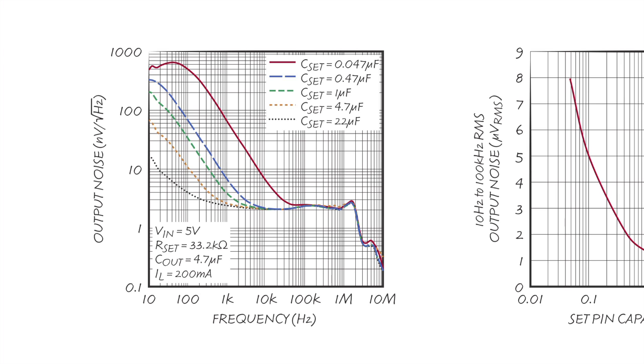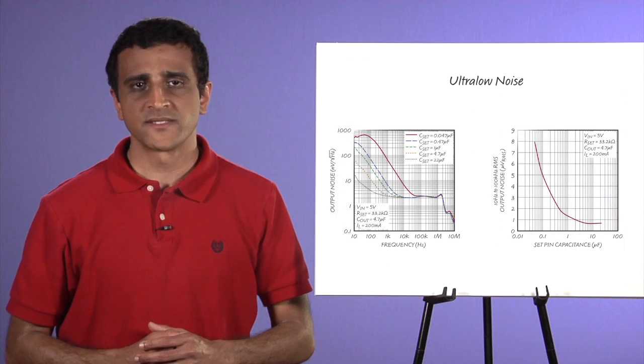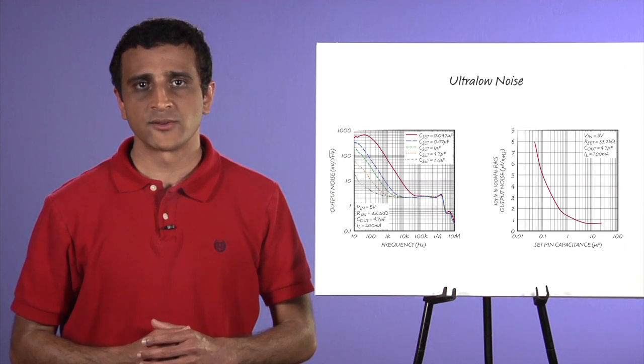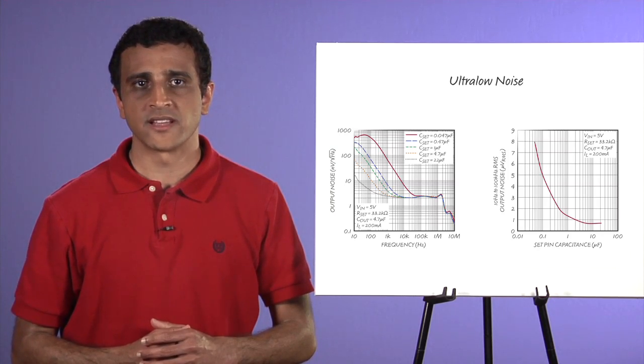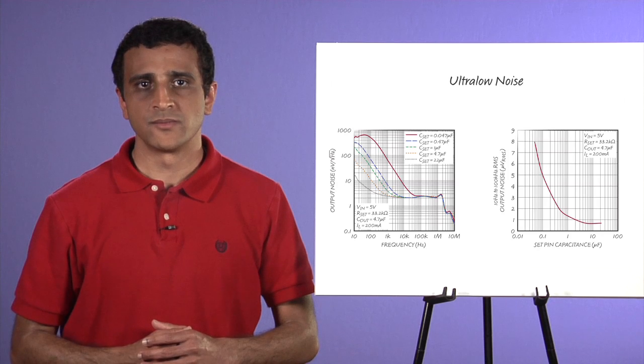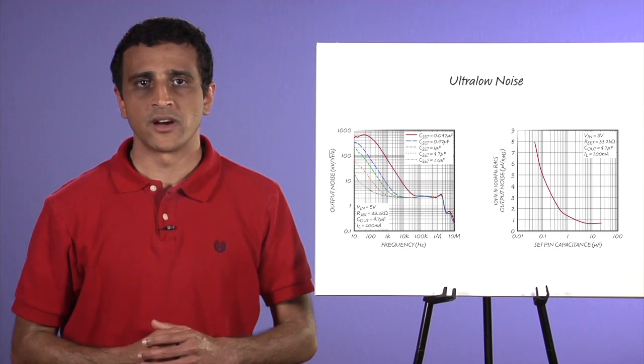As one of its many architectural advantages, the LT3042's set-pin can be actively driven by a lower-noise voltage reference to further reduce noise below 10 Hz. Additionally, multiple LT3042s can be directly paralleled for even lower output noise.